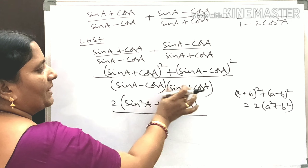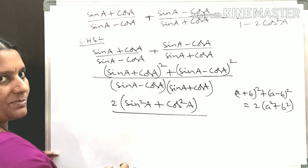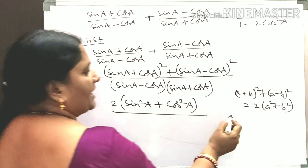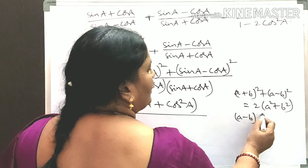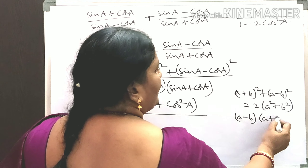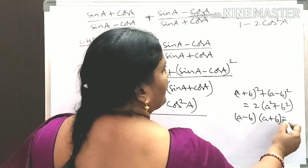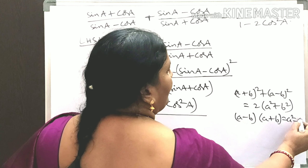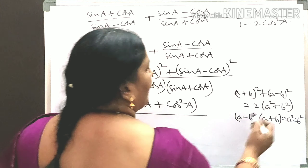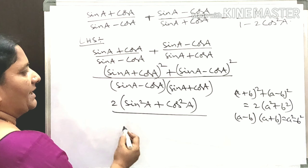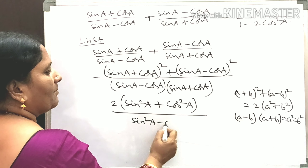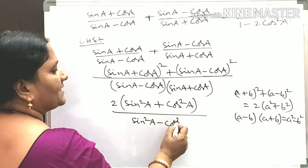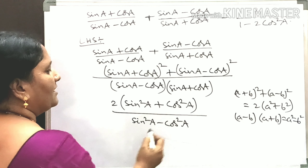The denominator is (A - B) into (A + B). Applying the formula (A - B)(A + B) = A² - B² to the denominator, it becomes sin²A - cos²A.